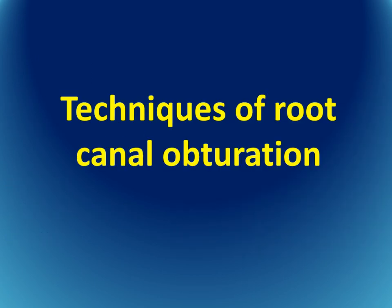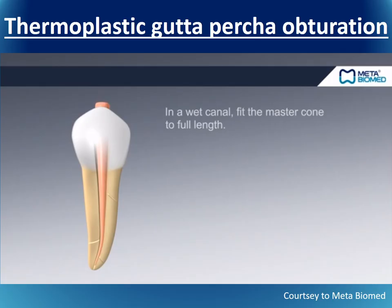Now we discuss the thermoplastic gutta-percha obturation technique. After instrumentation, the root canal is tapered and clean. We place the master cone in a wet canal and verify that it fits to the full working length.